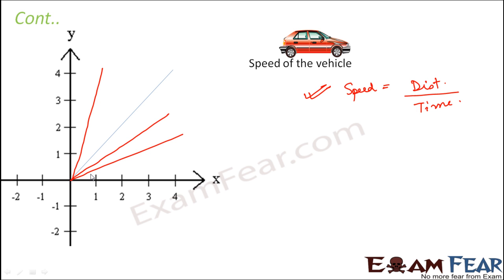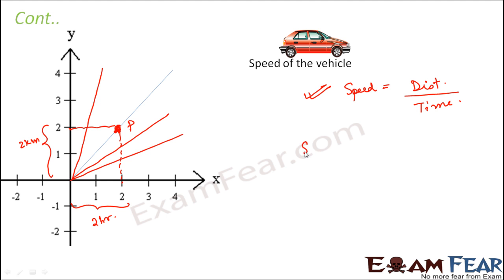Let's stick to the blue line. Consider a point P on this line. At this point, the distance travelled is 2 kilometres and the time taken is 2 hours. So speed at point P equals distance divided by time, which gives 1 kilometre per hour. We calculated this by taking the y-axis value divided by the x-axis value — and that is exactly what slope is: the y-value divided by the x-value.